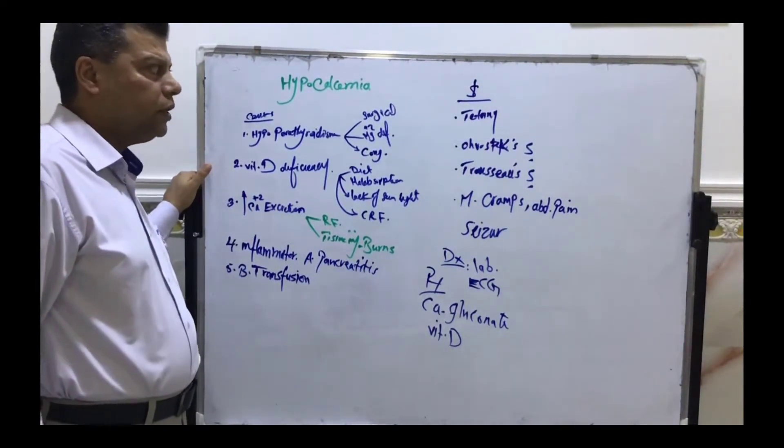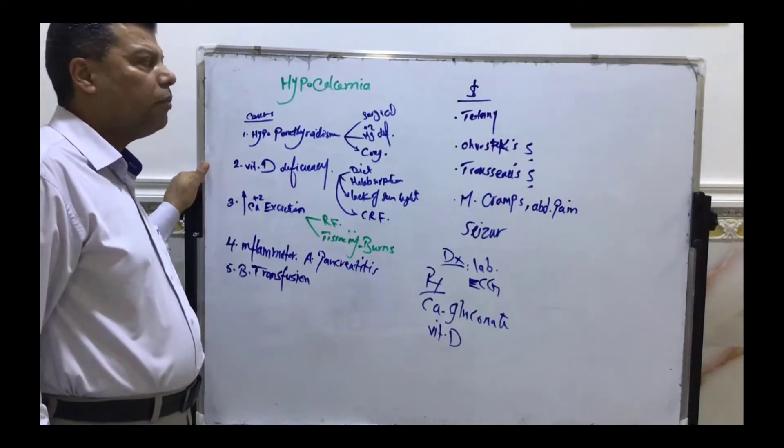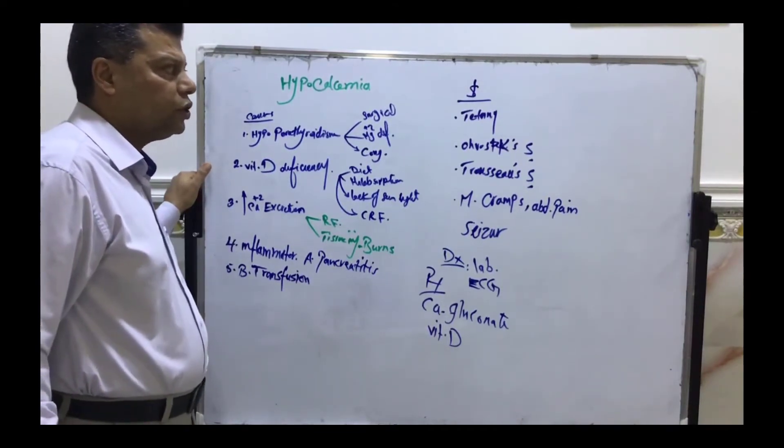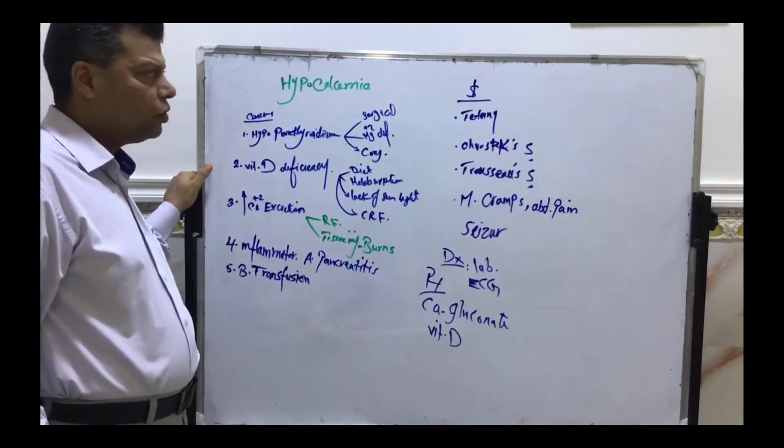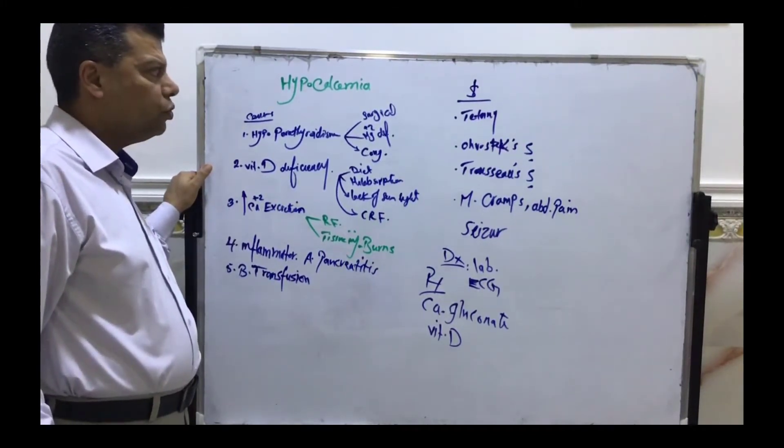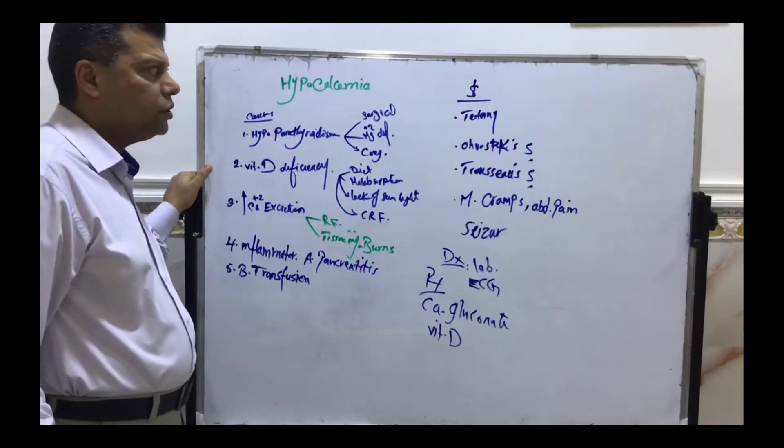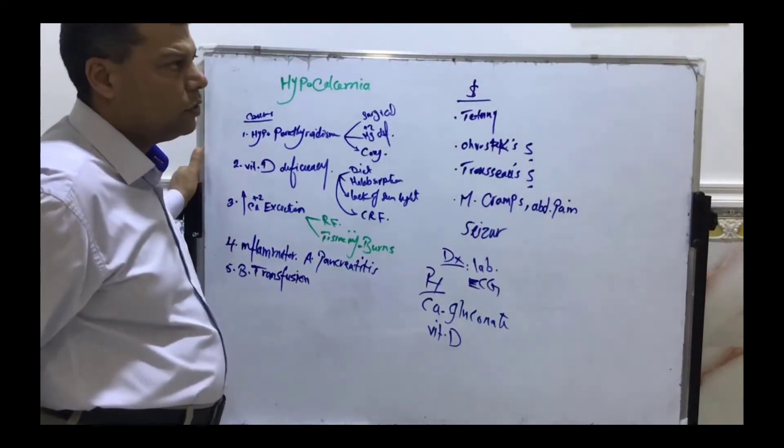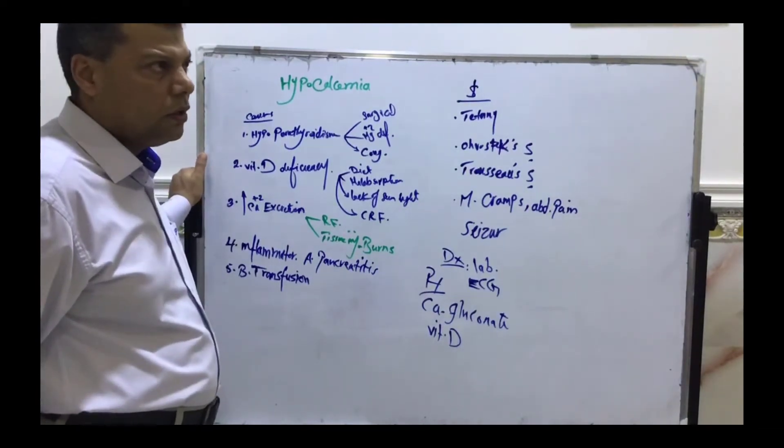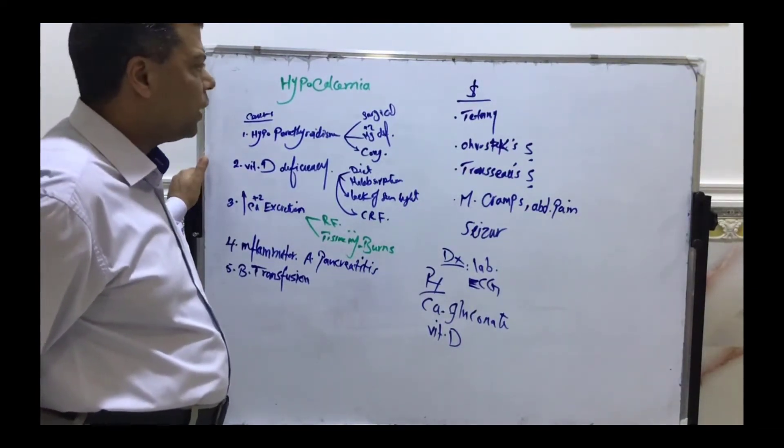Tetany is abnormal contraction of the muscle due to increased sensitivity of the cell and spontaneous depolarization.